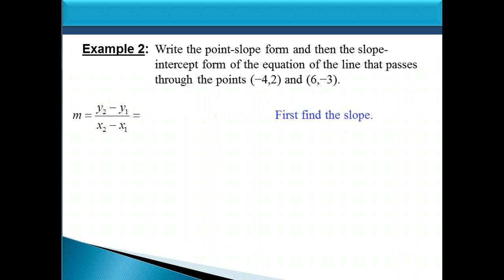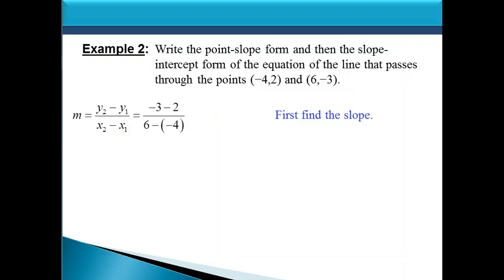The formula for finding the slope when given two points is y2 minus y1 over x2 minus x1. Using the first point negative 4, 2 as x1, y1, and the second point 6, negative 3 as x2, y2, we get negative 3 minus 2 on top and 6 minus negative 4 on the bottom. Simplifying gives us negative 5 over positive 10, and reducing that fraction gives a slope of negative 1 half.